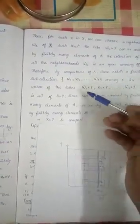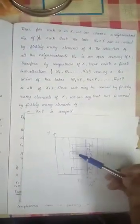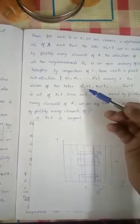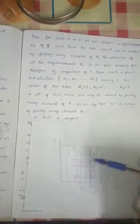Corresponding to the open set wk we can find the tube wk cross Y. We have found a finite number of tubes: w1 cross Y, w2 cross Y, ..., wk cross Y. Taking their union gives the entire set X cross Y. Therefore the entire space X cross Y is covered by finitely many tubes w1 cross Y, w2 cross Y, ..., wk cross Y. Hence by the definition of compactness, X cross Y is compact.